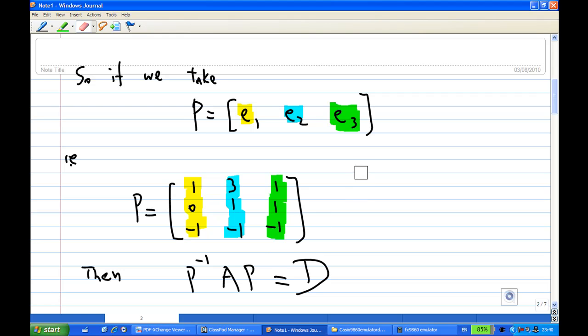E2 is 3, 1, minus 1. E3 is 1, 1, minus 1. Each should take out one column. Then, after you form this P.